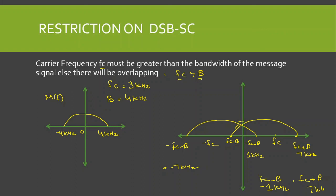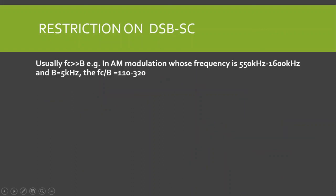The carrier frequency is usually taken much greater than the bandwidth of the message signal. For example, in broadcast AM radio, the modulation frequency range is 550 kHz to 1600 kHz and the message signal bandwidth is 5 kHz, so the fc/B ratio is 110 to 320 — very much greater than one.